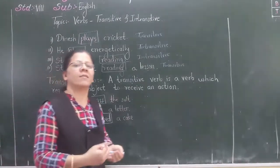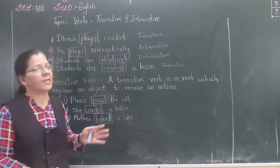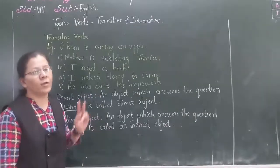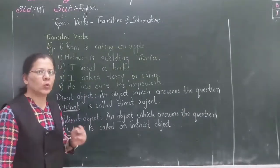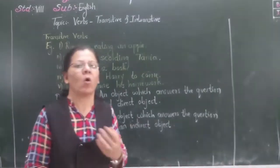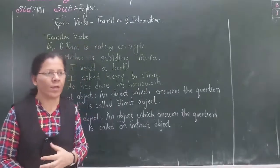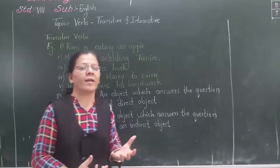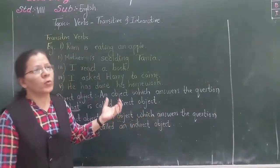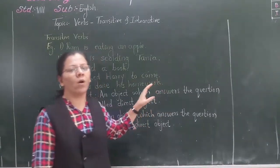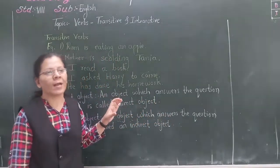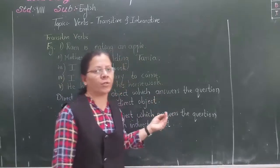In many sentences there are more than two objects. So how to identify whether the sentence has an object or not, and how to find out what kind of object it is? You need to ask two questions to the verb: 'what' and 'whom'. When you ask 'what' and 'whom' to the verb, you get your object.